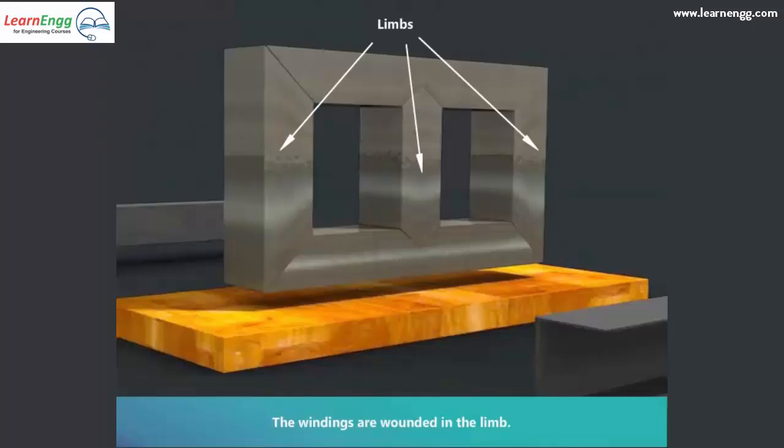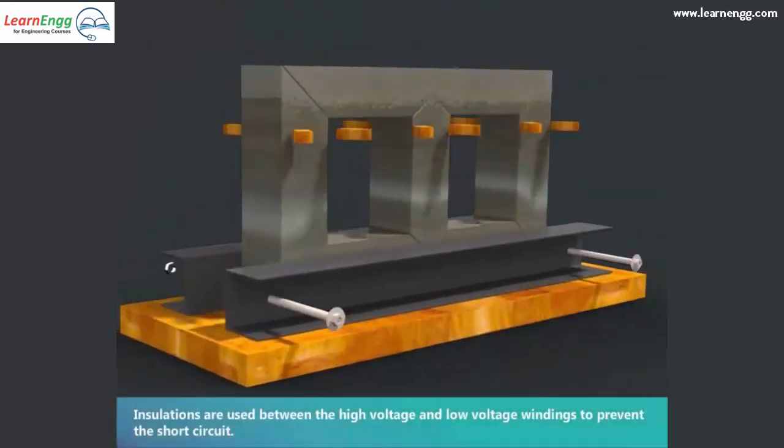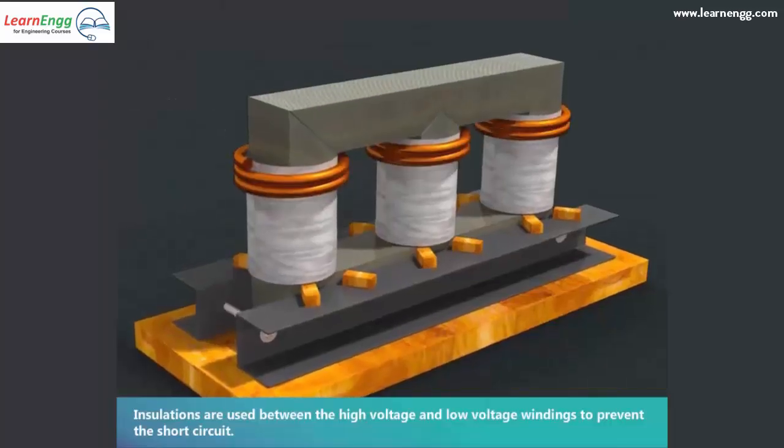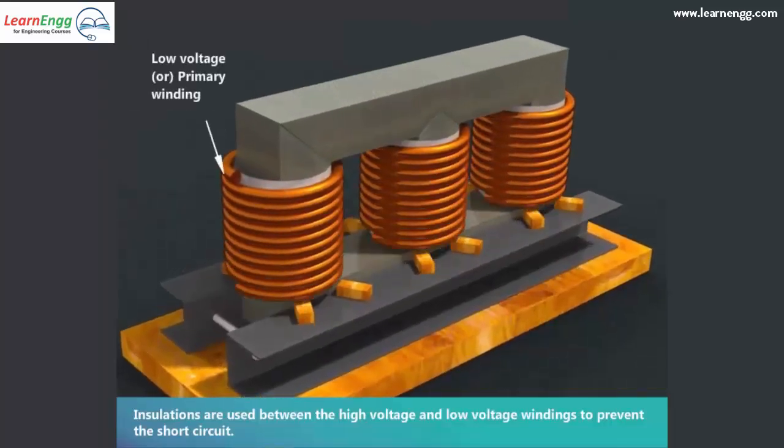The windings are wound in the limb. Insulations are used between the high voltage and low voltage windings to prevent short circuit.